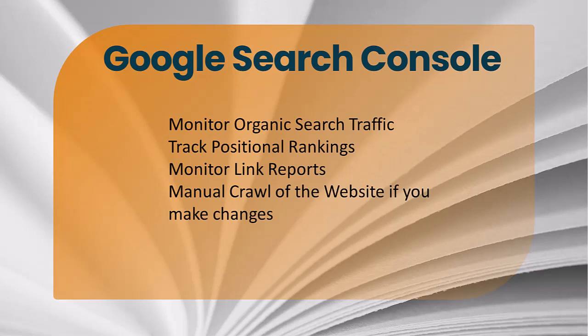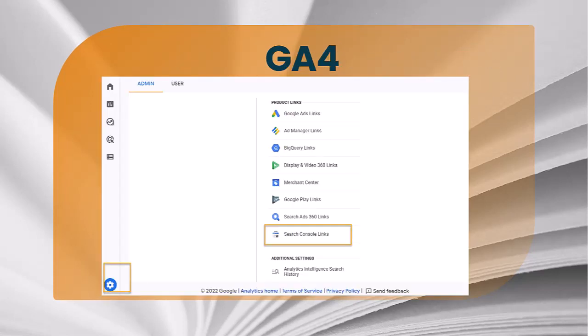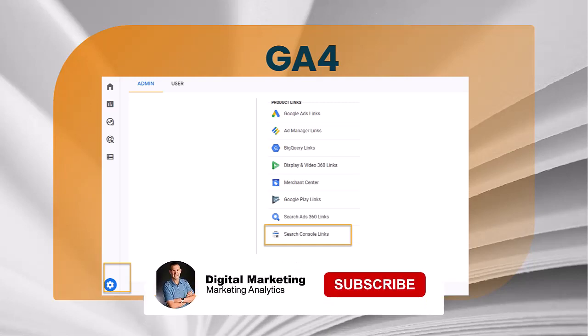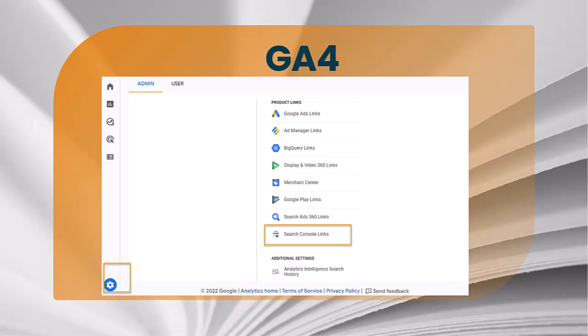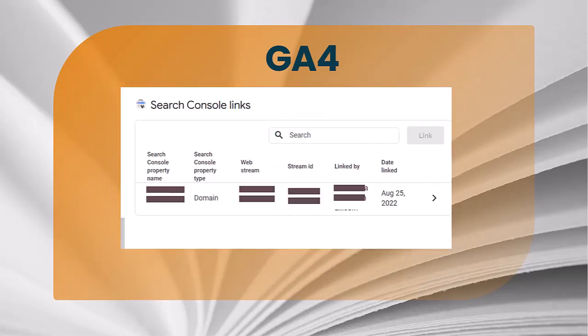To actually connect your GA4 account to Search Console, you want to be in GA4 on the home screen. From the home screen, hit the admin button — that gear button at the bottom of the screen — which will bring you to Product Links. We recently showed how to connect to Google Ads in another video. To connect Search Console, just click on that link and it will bring up the links available for your Google Search Console.